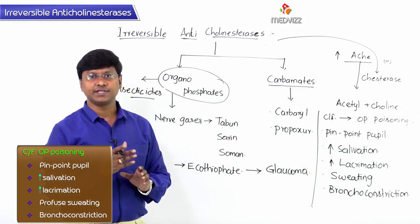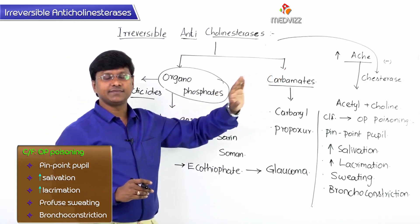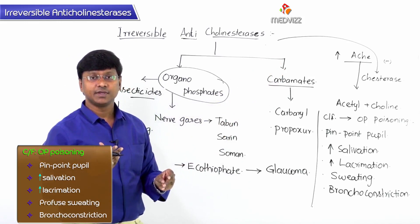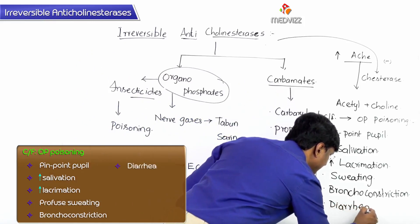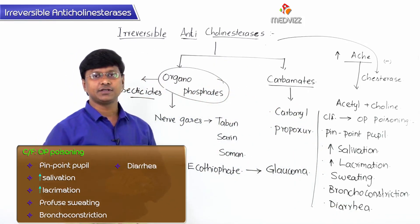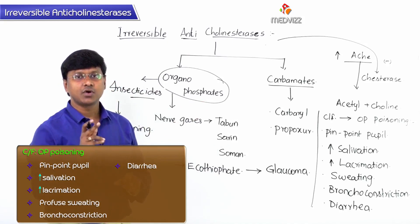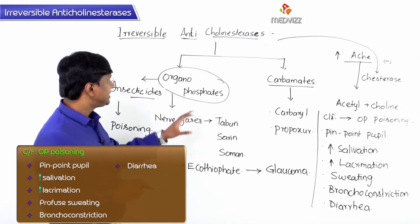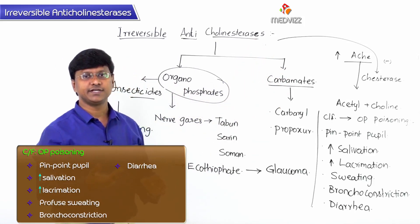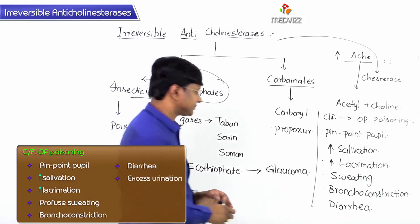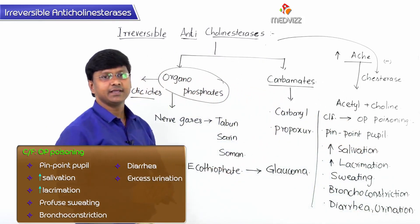Acetylcholine increases gastrointestinal motility, so in organophosphorous poisoning the GI motility grossly increases, manifested as diarrhea. Acetylcholine also causes contraction of the detrusor muscle of the urinary bladder, resulting in excessive urination due to the cholinergic crisis.